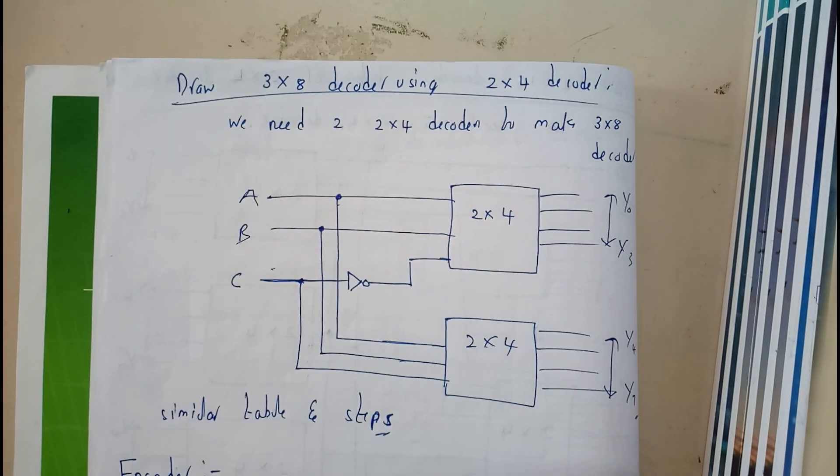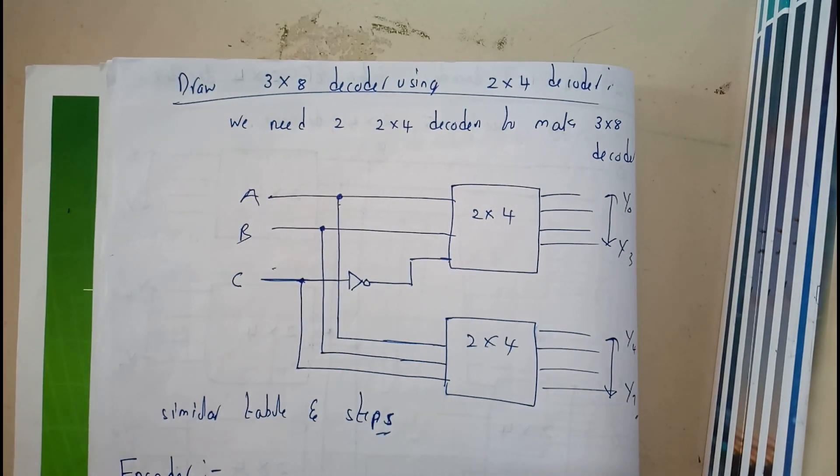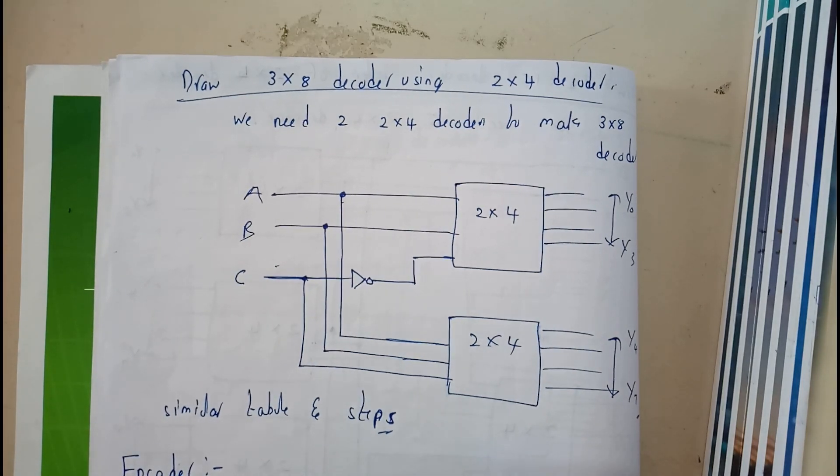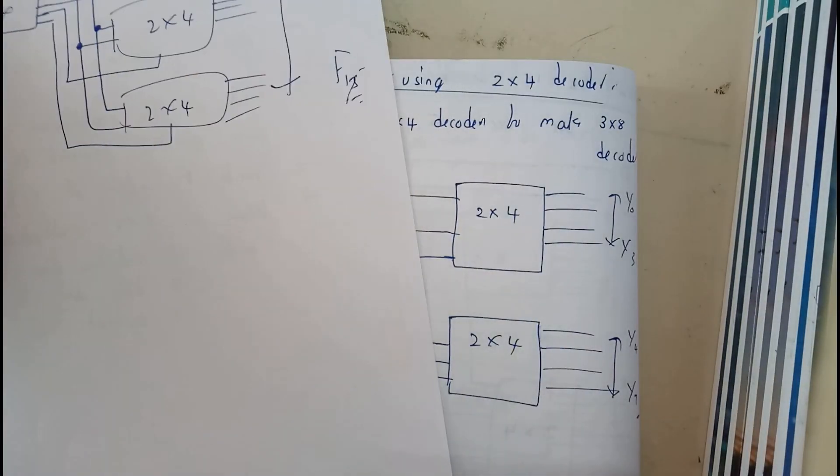Hello guys, we are back with our next tutorial. In this tutorial, let's see how we can draw a 3 into 8 decoder using 2 into 4 decoder. So basically we need two 2 into 4 decoders to make a 3 into 8 decoder. As we have just drawn previously, I'll be just going through it again.